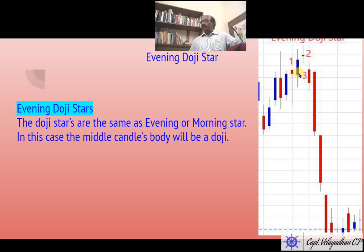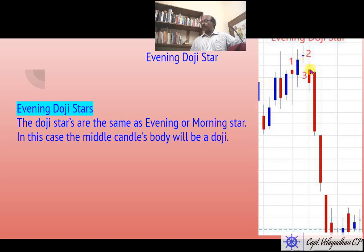The market gapped up here, pulled up, then pulled back again and closed with a narrow body. The next day the market gapped down again — market closed here, gapped down, then market moved down all the way. And this part became the resistance. This is our evening doji star.